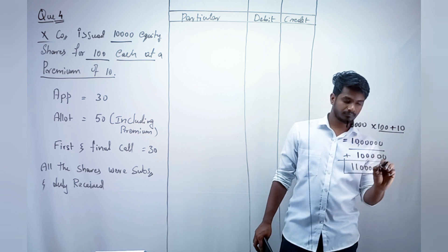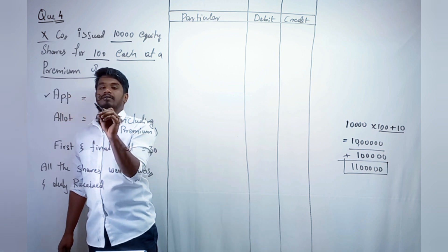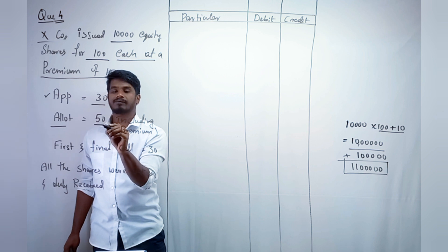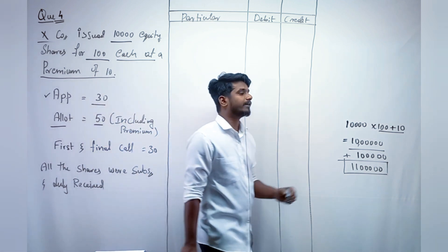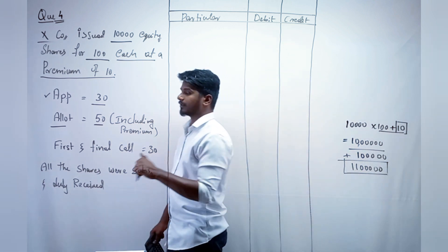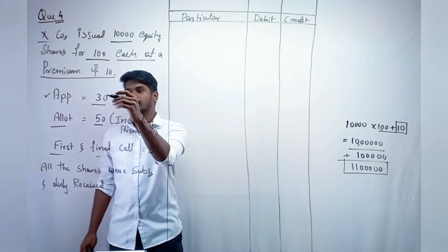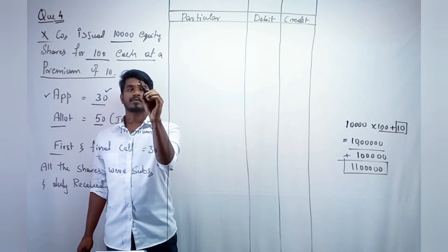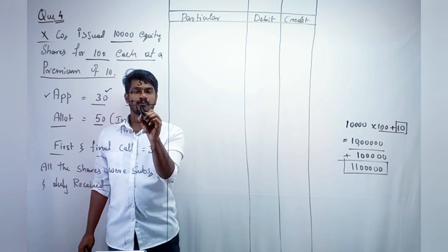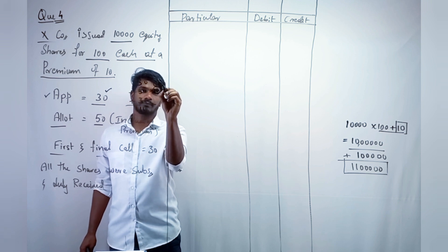On application we will receive 30 rupees, and on allotment we will receive 50 rupees including the 10 rupee premium. The remaining amount on the first and final call is 30 rupees. If you total this — 30 plus 50 plus 30 — it becomes 110 rupees because we have 10 rupees share premium.